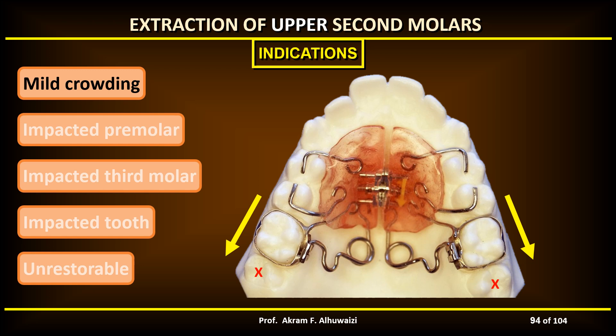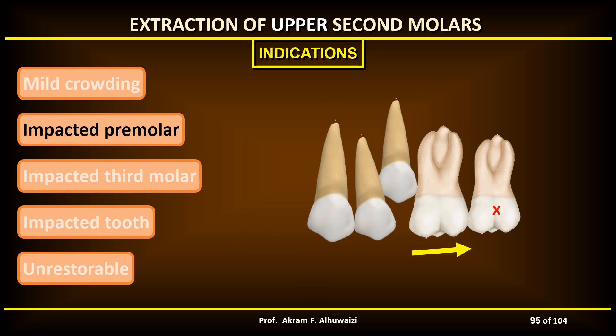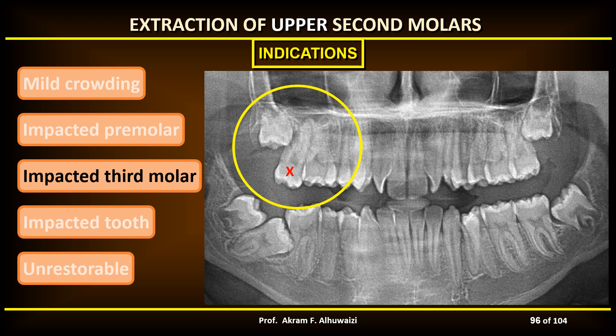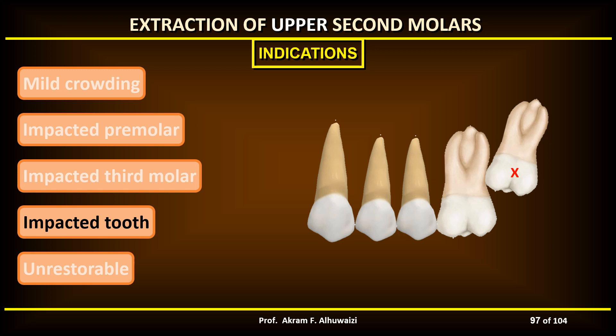Severely carious, ectopically erupted, or severely rotated second molars are indicated for extraction. Their extraction could also help in relief of anterior open bite, especially in severe cases where occlusion is mainly on the second molars. Extraction of upper second molars is indicated in mild crowding cases where less than 3 to 4 mm of space is required, done by distalizing the whole arch into the extraction site; also to relieve impacted premolars by distalization of the first molar; and to make space for impacted upper third molars — provided the third molars are in favorable angulation, their size and shape are sufficient to serve in place of the second molar, and this should be done before the eruption time of the third molar. Another indication is when the second molar is impacted against the first molar or is severely carious with questionable prognosis.